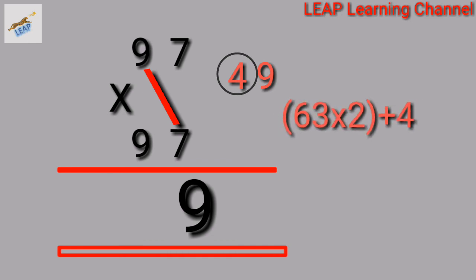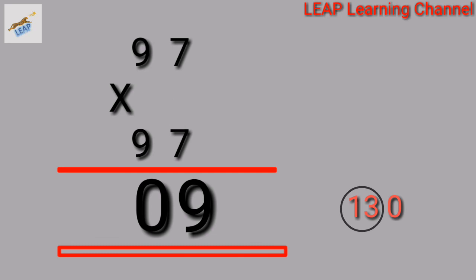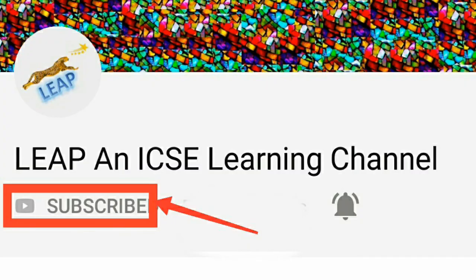Square of 97. 97 into 97. 7 times 7 is 49. Cross multiply: 9 times 7 is 63. Then double it: 63 into 2 is 126. 126 plus 4 is 130. Write 0, carry over 13. 9 into 9 is 81. 81 plus 13 is 94. So square of 97 is 9409.